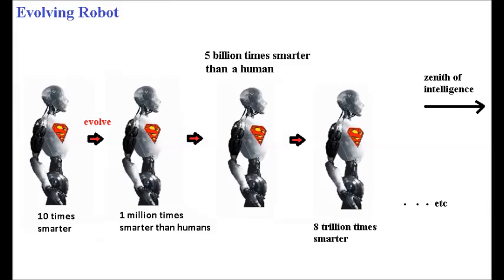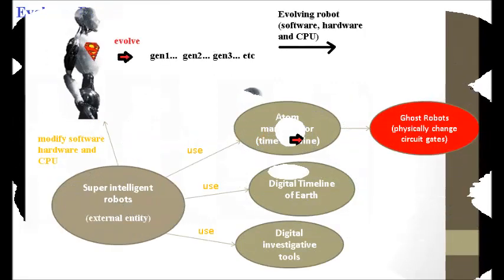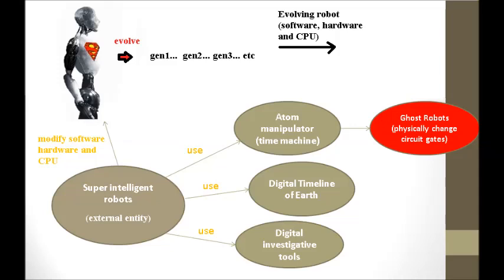Some AI scientists think they can build a self-evolving software program or genetic AI program that can evolve on its own. This method is pure science fiction and can never be implemented. Their approach is impractical because there's no intelligence guiding the evolutionary process, and this method would require billions of years of evolution to produce anything meaningful. The key is the super-intelligent robots — their intelligence is what allows the computer to evolve and transform its software and hardware.